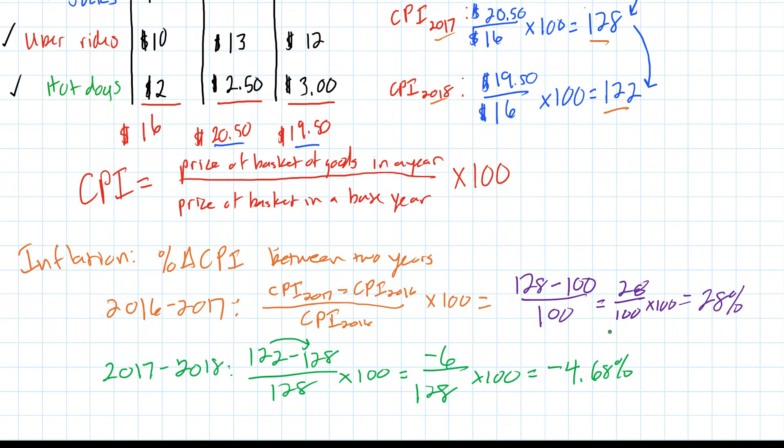Between two years, we can always calculate the inflation rate by determining the percentage change in the CPI. To do that, we take the CPI in year two, in this case it was 2018, subtract the CPI in year one, that would be the previous year of 2017, divide it by the previous year's CPI, and multiply that by 100 to get the inflation rate.